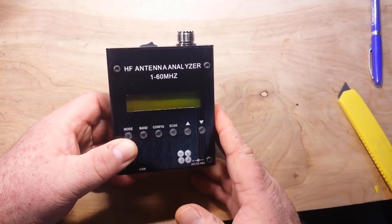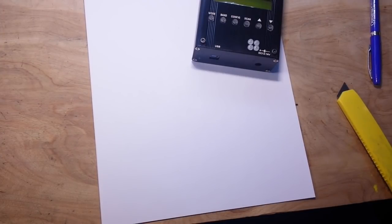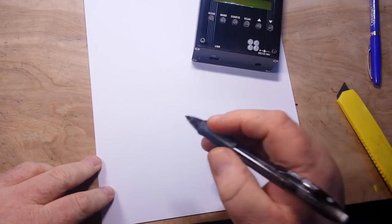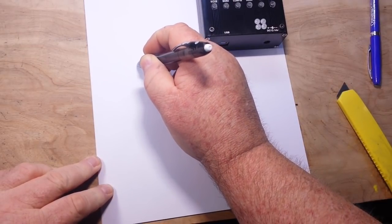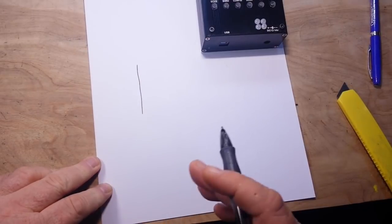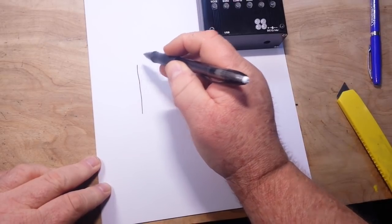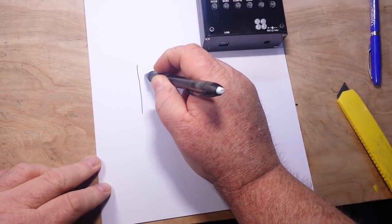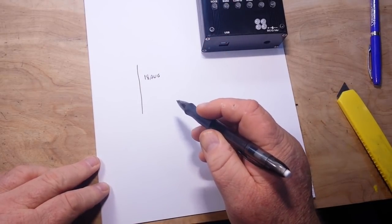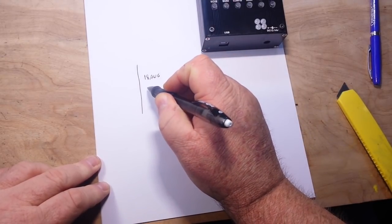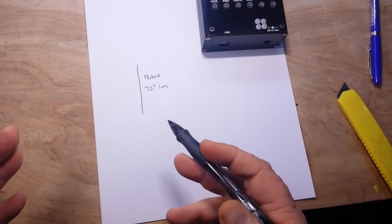But first before we get into this let's talk a little bit about an antenna. We're not going to get into the whole antenna theory, just basically hit it so you guys can understand. Any type of conductor can be an antenna. Let's say for instance this is a piece of 18 AWG solid core wire and it is 72 inches long. That's our antenna.